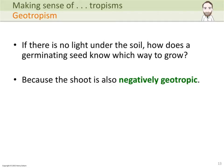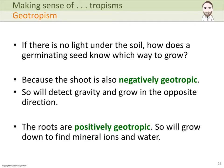The shoot detects gravity and grows away from it. The roots, as you may have guessed, are positively geotropic. They detect gravity and will grow down to hopefully find more mineral ions and water that they need.